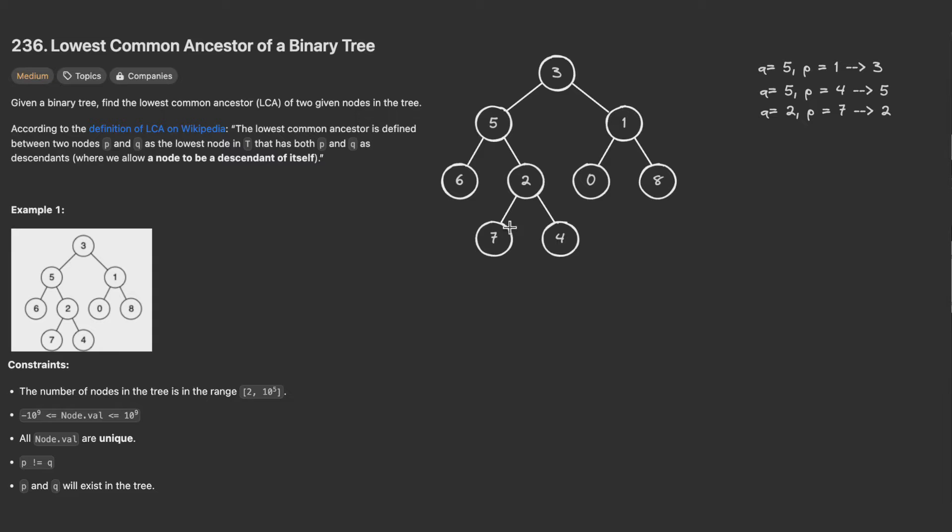First let's assume this is a binary search tree and we want to find Q equals 5 and P equals 1. In a binary search tree we know that all elements on the left hand side of the tree will be less than the root and all elements on the right hand side will be greater than the root. But this is not the case. So how can we solve this problem?